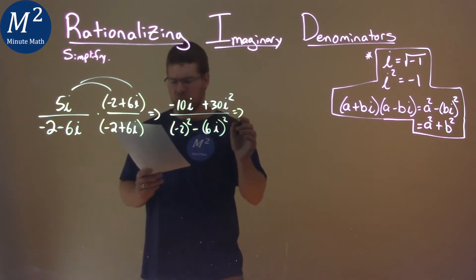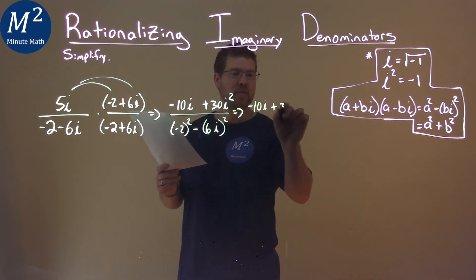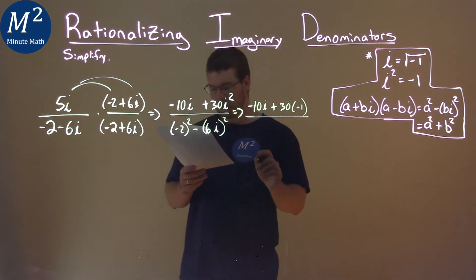So let's simplify this. Negative 10i stays where it is. 30i squared—i squared is negative 1—so we have plus 30 times negative 1 over negative 2 squared is positive 4.